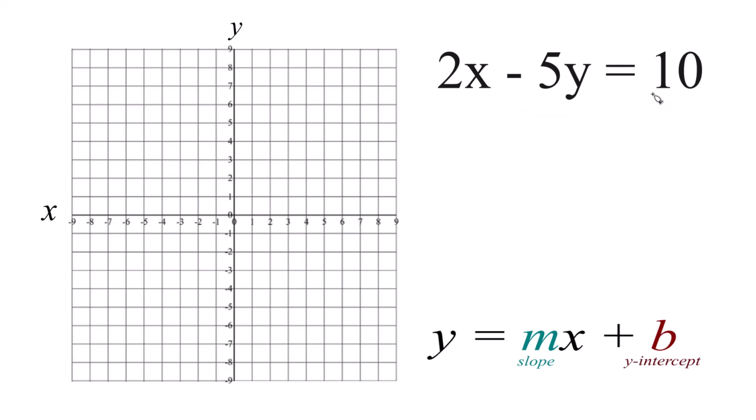You could use a table of values and that would work fine, although it gets a little bit messy with this. I prefer to use slope intercept form here to do this. It's a little bit quicker.